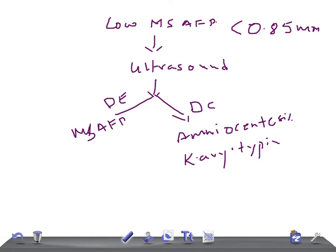To summarize the triple screen: if AFP is elevated with normal estriol and normal hCG, think dating error or neural tube defect. If AFP is low, estriol is low, and hCG is elevated, think Down syndrome or dating error. If AFP is low, estriol is low, and hCG is also low, think dating error or Edwards syndrome.